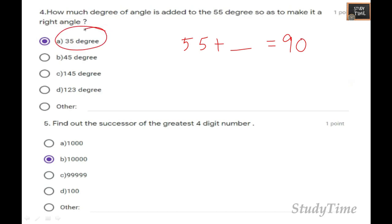Find out the successor of the greatest four-digit number. Successor meaning is next number. The greatest four-digit number is 9999. The successor, the next number, is 10,000.